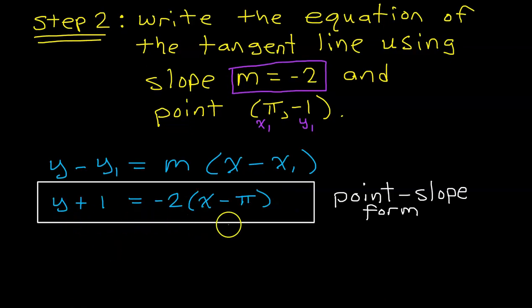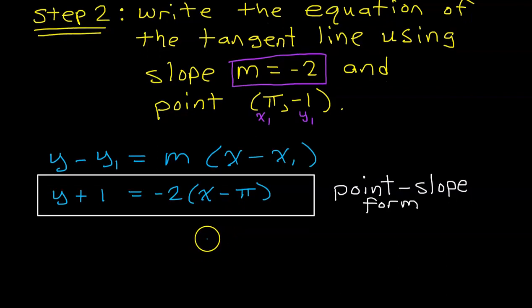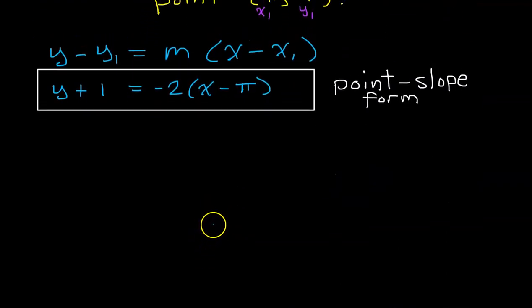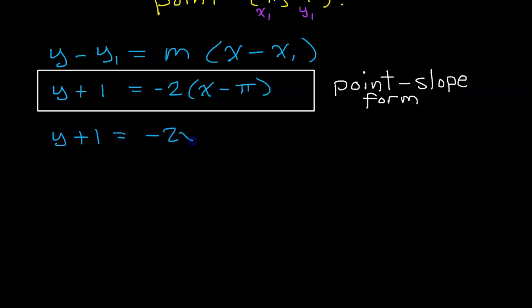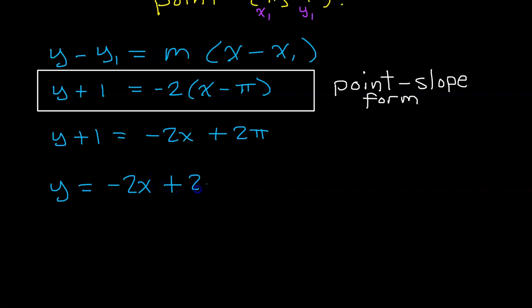Many teachers would accept this as your final answer, but you might want to rewrite in slope-intercept form, which means getting y by itself and simplifying. Using the distributive property with the negative 2, we get y plus 1 equals negative 2x plus 2pi. Subtracting 1 from both sides gives y equals negative 2x plus 2pi minus 1. This is slope-intercept form.